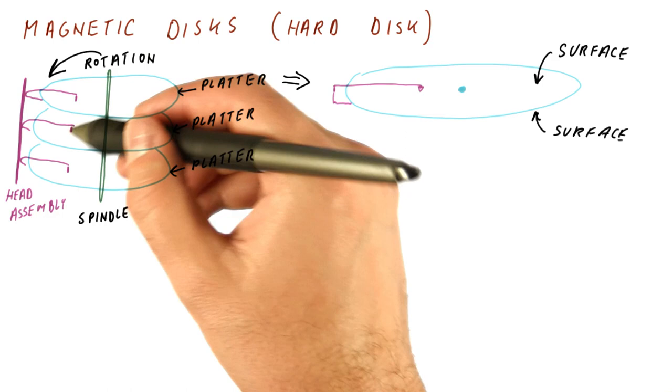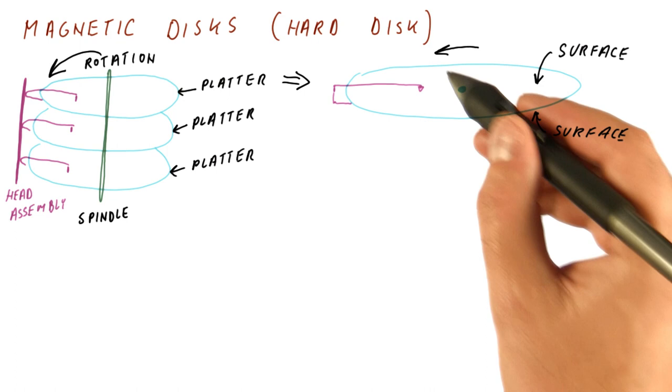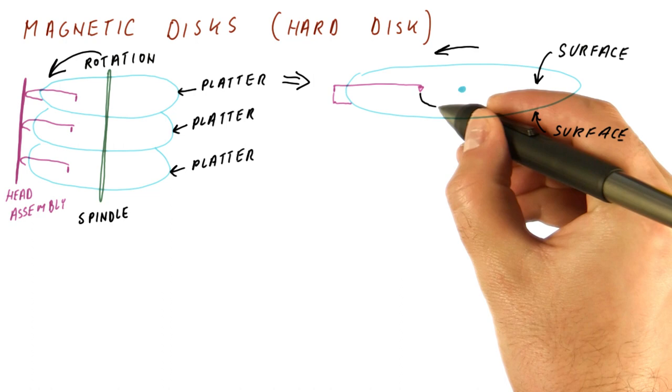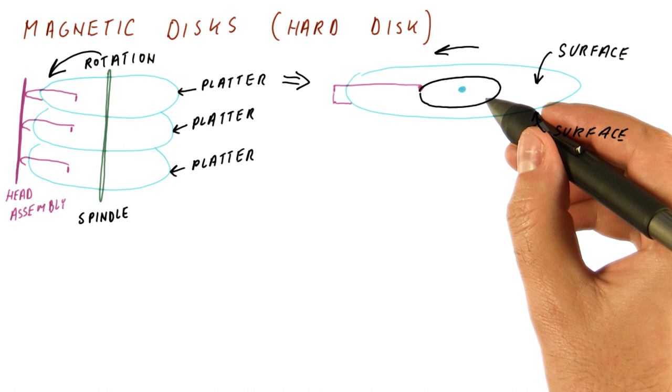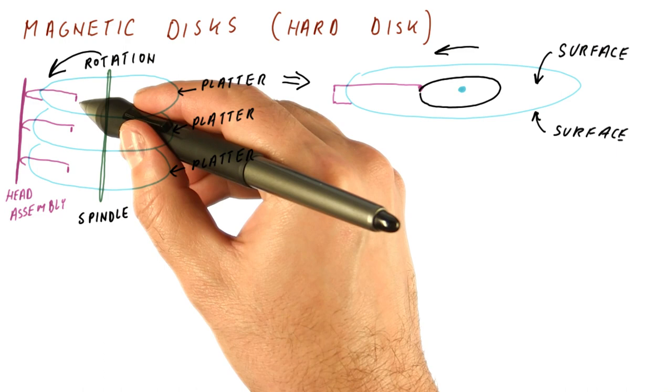So because the platter is rotating and the head is staying in place usually, the head will be able to access this circle on the surface of the disk. Each head will be able to access the circle on its own surface, and all of these are going to be at the same distance from the spindle.